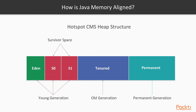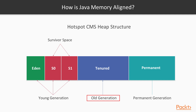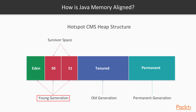We'll see how Java memory is aligned, and this applies to every garbage collector besides G1 — everything else uses this memory alignment. In Java, memory is separated into different spaces: we have young generation and old generation, which are the most important, and also a permanent generation. Let's begin by focusing on the young generation.